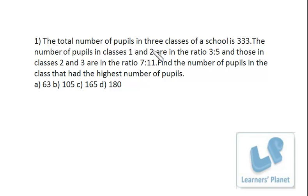The total number of pupils in the three classes of a school is 333. The number of pupils in class 1 and 2 are in the ratio 3 is to 5, and those in class 2 and 3 are in the ratio 7 is to 11.